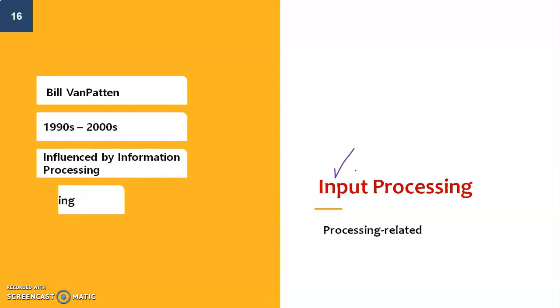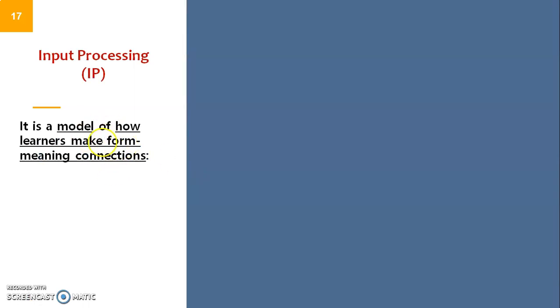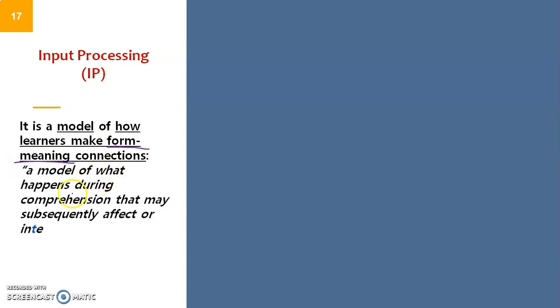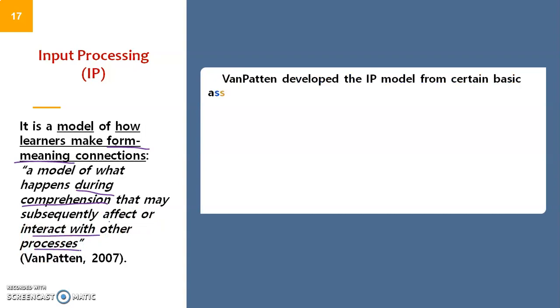VanPatten proposed a distinction between form and meaning, and this is the basic thing we'll see here. It is a model of how learners make form-meaning connections. When we talk about form, we are talking about language features like linguistic rules. It is a model of what happens during comprehension - during input - that may subsequently affect or interact with other processes.